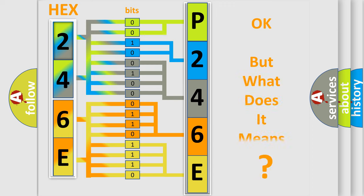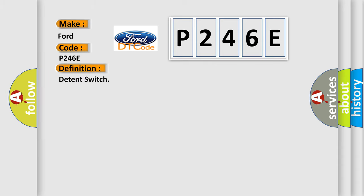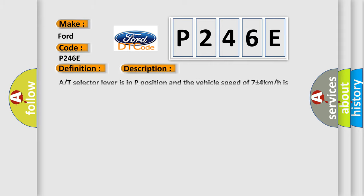We now know in what way the diagnostic tool translates the received information into a more comprehensible format. The number itself does not make sense to us if we cannot assign information about what it actually expresses. So, what does the diagnostic trouble code P246E interpret specifically? The basic definition is: Detent Switch. At selector lever is in P position and the vehicle speed of 7 plus or minus 4 kilometers per hour is detected.